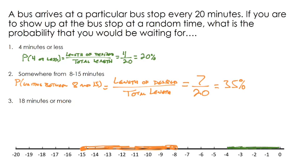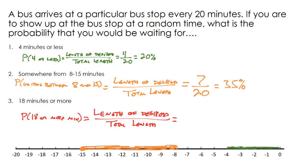For the probability of waiting 18 minutes or more: length of desired segment over total length. If you're waiting 18 or more minutes, you're showing up right after the bus leaves, which is from negative 20 to negative 18 — just two units on the number line. So that's 2/20 = 0.10, a 10% chance.